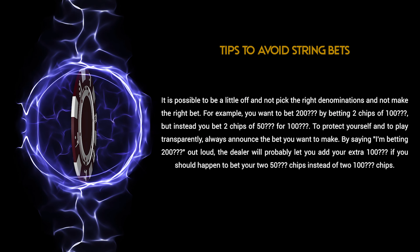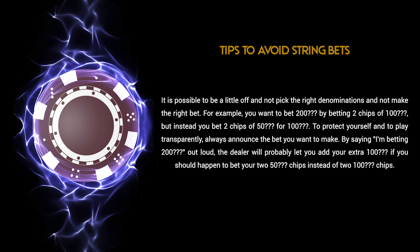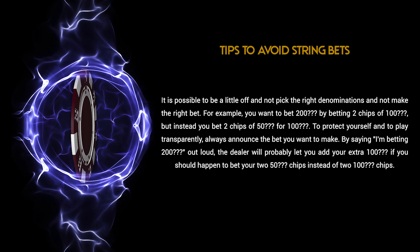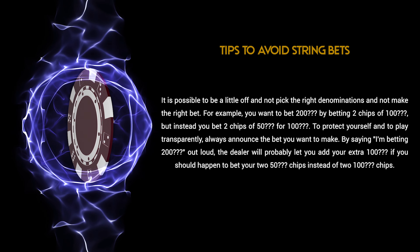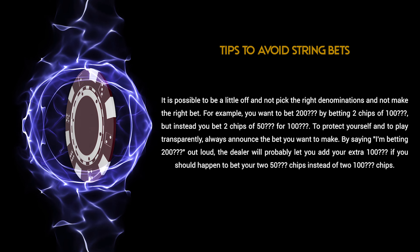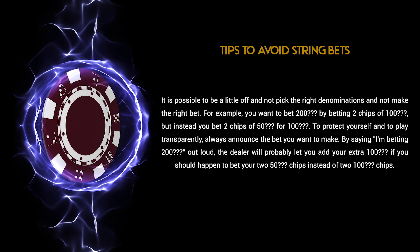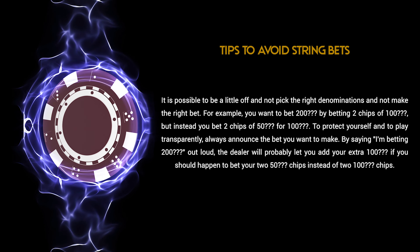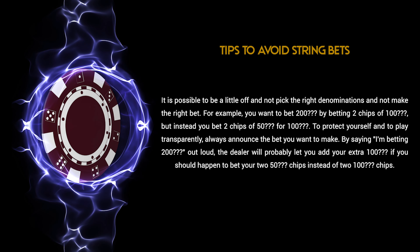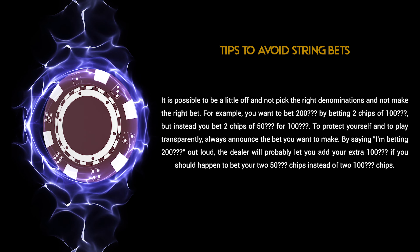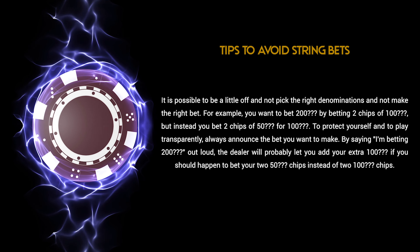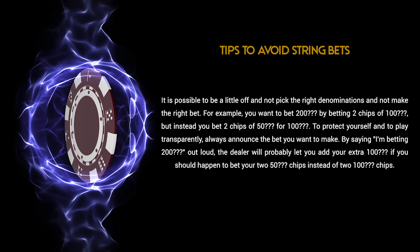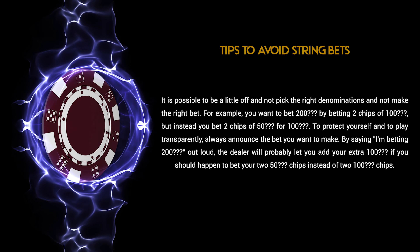Tips to avoid string bets: it is possible to be a little off and not pick the right denominations. For example, you want to bet 200 by betting two chips of 100, but instead you bet two chips of 50 for 100. To protect yourself and to play transparently, always announce the bet you want to make by saying 'I'm betting 200' out loud. The dealer will probably let you add your extra 100 if you happen to bet 250 chips instead of 200 chips.